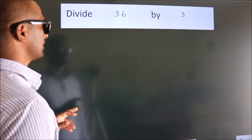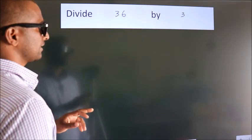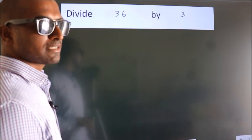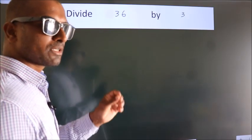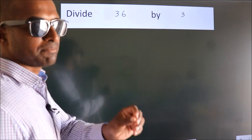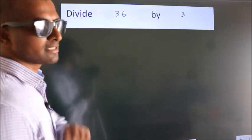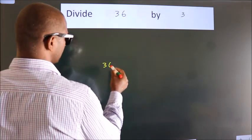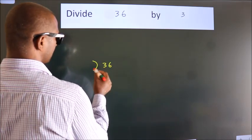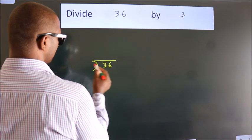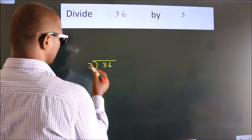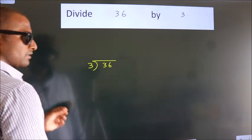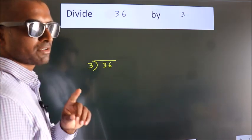Divide 36 by 3. To do this division, we should frame it in this way. 36 here, 3 here. This is your step 1.